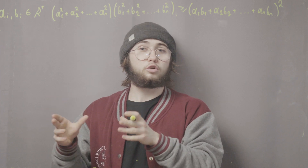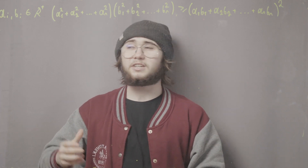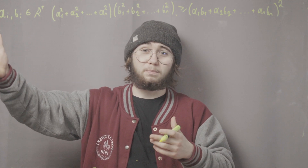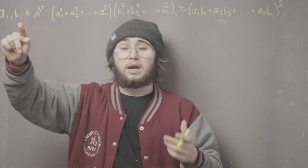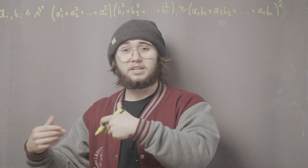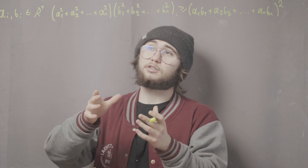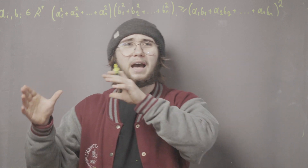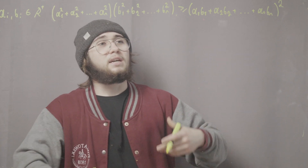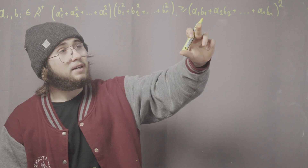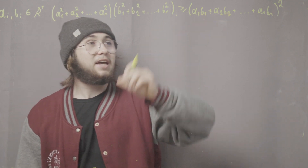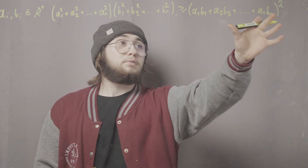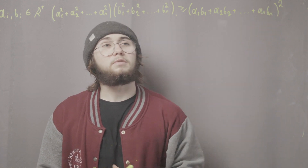We would like to prove the Cauchy-Schwarz inequality. It states that for two sequences of positive real numbers, denoted aᵢ and bᵢ, we have that the sum of a₁² + a₂² + ... + aₙ² multiplied by the sum of b₁² + b₂² + ... + bₙ² is greater than or equal to (a₁b₁ + a₂b₂ + ... + aₙbₙ)².